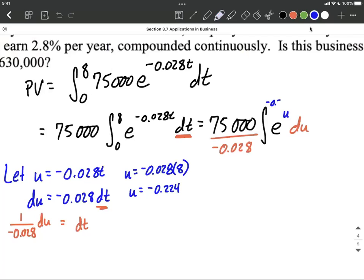Negative 0.224 gets filled in for our upper bound. Now, the lower bound is just putting in a 0, negative 0.028 multiplied by 0, which will work out to be a 0 for our lower bound. So U substitution, changing our bounds of integration.